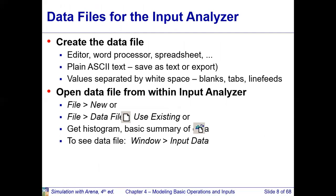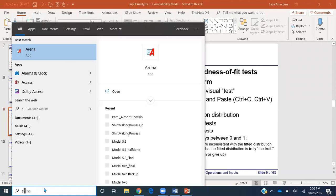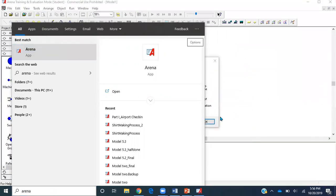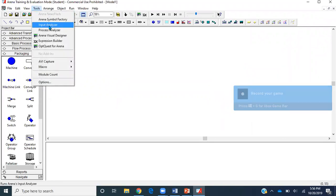To use Input Analyzer, you need to create a data file. You may collect your data in a Word or Excel file, but you have to make sure the file format is ASCII text and the values are separated by blank spaces. Then you open a new file in Input Analyzer. Instead of just reading from slides, I want to show you the functionality of this tool, so I'll go to ARENA and double-click to open it, then click OK. Under the Tools tab, I'll click on Input Analyzer.